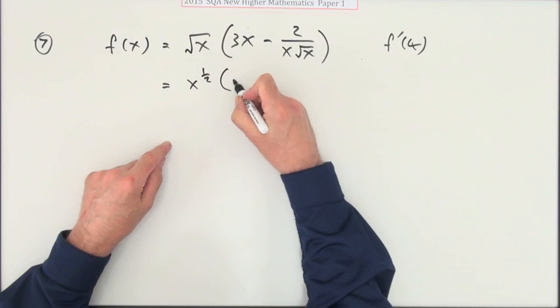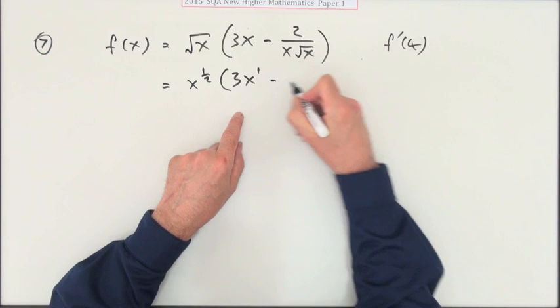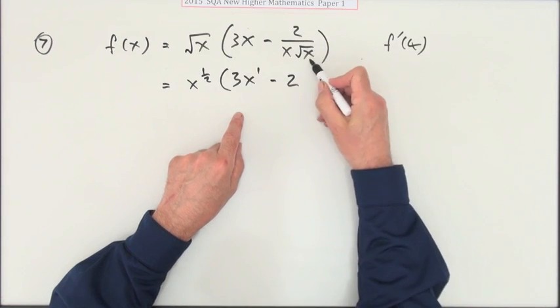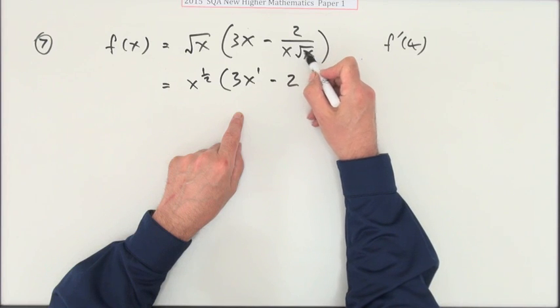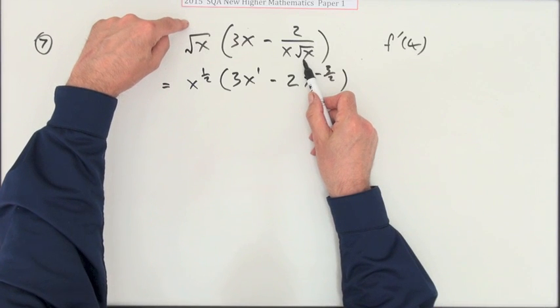Let me spell it out first. It's x to the power of half times 3x to the power 1 minus 2 over x to the power half. That's power 1 and power half which is power 3/2, so that's 2x to the power negative 3/2. You can easily see they're going to cancel.